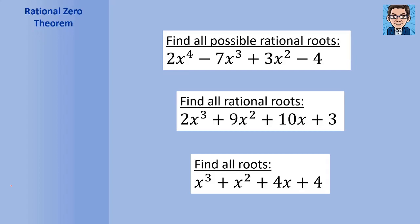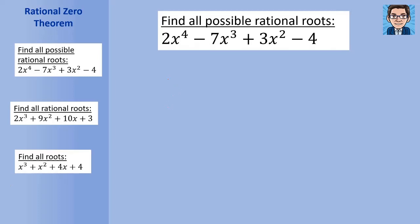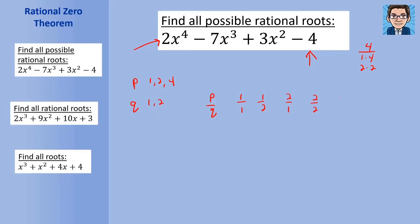On the first problem, we're asked to find all possible rational roots. We're going to look at the factors of the constant term — that's P. For the constant 4, we can make it by 1 times 4 or 2 times 2, so 4 has three factors: 1, 2, and 4. Q is a factor of the leading coefficient, so the options for Q are 1 or 2. When we do P over Q, we have 1 over 1, 1 over 2, 2 over 1, 2 over 2, 4 over 1, and 4 over 2 — and all of these are plus or minus.